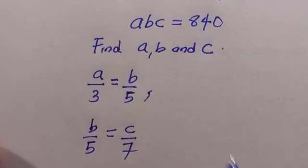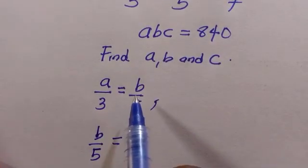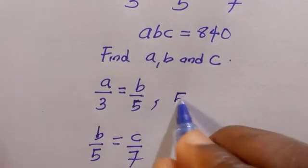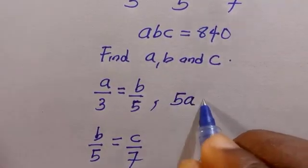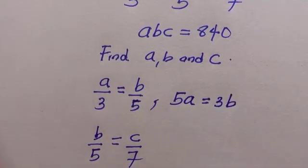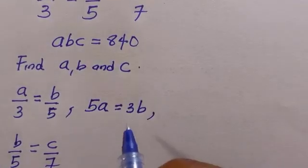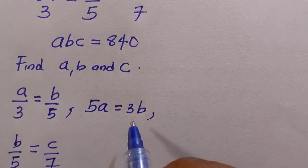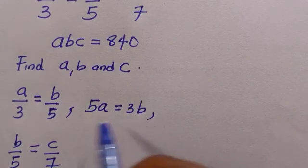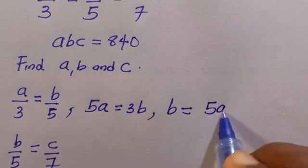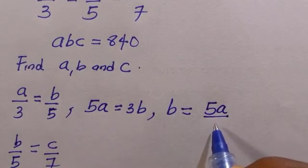All right, to get the value of a, b, and c, let's say from the first one, if you cross multiply we're going to have 5a equals 3b. And by making b the subject of the formula here, we're going to divide both sides by 3 and we have the result as b equals 5a divided by 3.